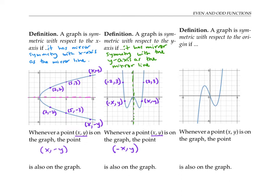Finally, a graph is symmetric with respect to the origin if it has 180-degree rotational symmetry around the origin. This means that if I spin it by 180 degrees, the graph should line up exactly with itself. Rotating a graph by 180 degrees is the same thing as turning it upside down. So one way to see if a graph has symmetry with respect to the origin is to turn it upside down and see if it looks exactly the same. This one does.